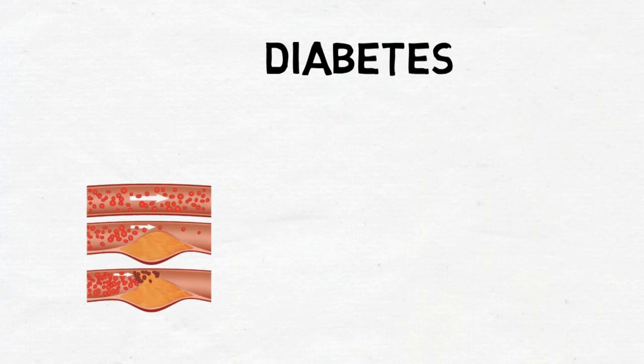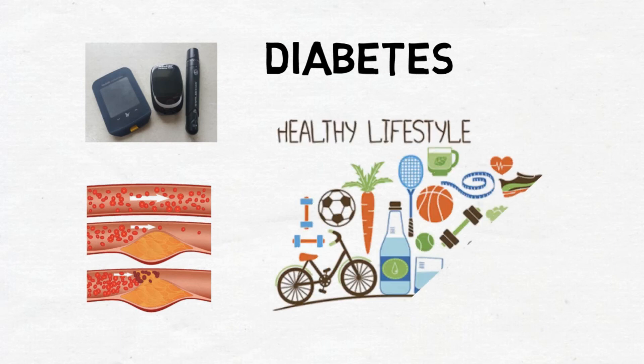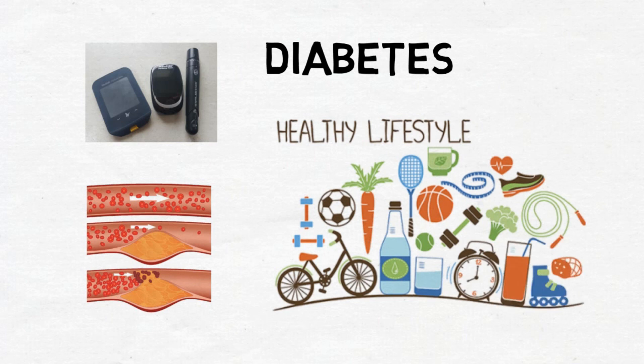Having diabetes can increase your risk of developing heart disease, as it can increase the risk of plaque narrowing the coronary arteries. You can help by managing your diabetes and keeping your blood glucose levels within recommended levels. Once again, adopting a healthy lifestyle — including stopping smoking, maintaining a healthy weight, undertaking regular physical activity, and eating a healthy diet including limiting alcohol — will help with your diabetes management as well as reduce your risk factors for heart disease.